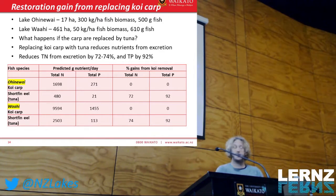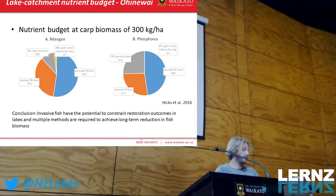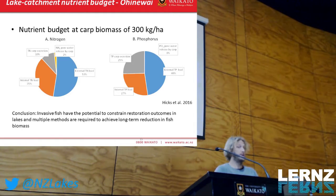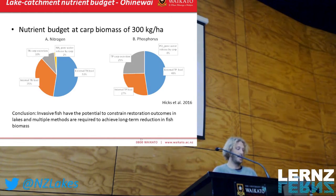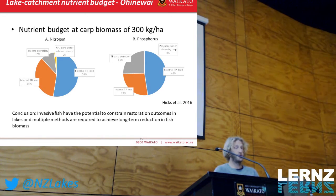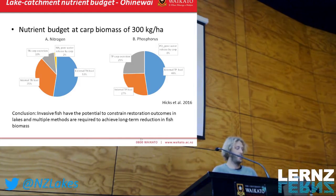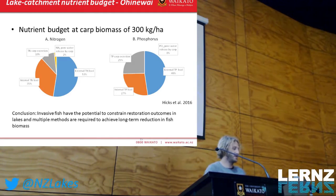In terms of contribution to nutrient budgets, carp biomass, excretion, and nutrient translocation show that carp can contribute significant amounts to total nutrient loading. The external load from the lake catchment is about 50% of the total phosphorus load, and we showed that carp can actually contribute up to 25%. There are some large error terms around some of this modeling, so these can vary based on various parameters and assumptions, but the contribution to total load can be really significant. Similarly for nitrogen, carp can contribute up to 10% of the total load.